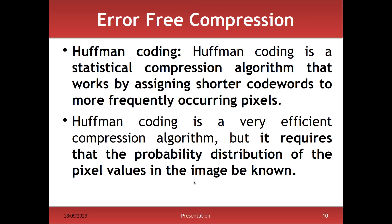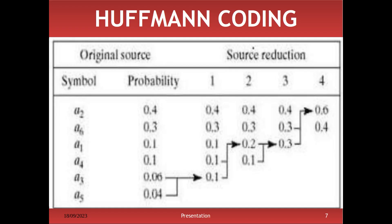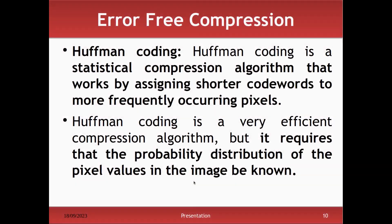Huffman coding uses a statistical compression algorithm that works by assigning shorter code words to more frequently occurring pixels. We take the frequently occurring pixel and replace it with a shorter code word. To apply Huffman coding, you need to know the probability values. The probability values are combined until finally we get two values — starting from six probability values initially.